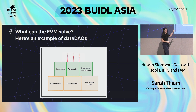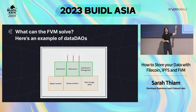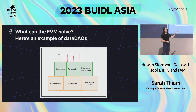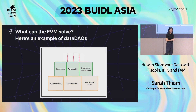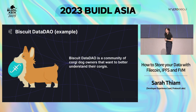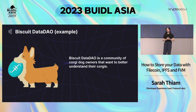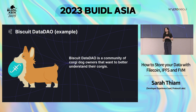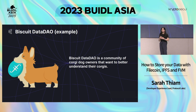The data DAO diagram shows two layers: the first is around perpetual storage — making sure your storage is well taken care of. The layer on top is what you'd see in a typical DAO: governance, tokens, endowment management on your treasury, which interacts seamlessly with the storage layer. This is something super unique to FVM. The example we call is the Biscuit Data DAO — Biscuit being the Corgi mascot for Filecoin. Imagine a community of Corgi dog owners collecting data to better understand their Corgis and how they behave.